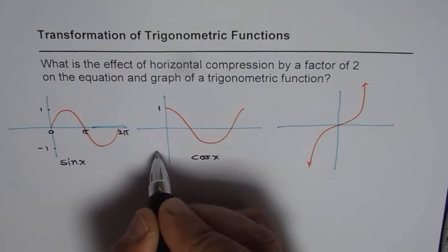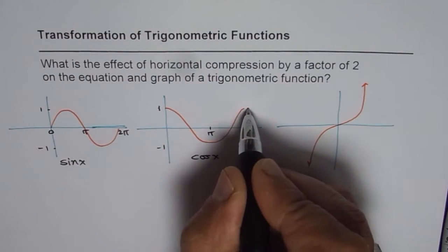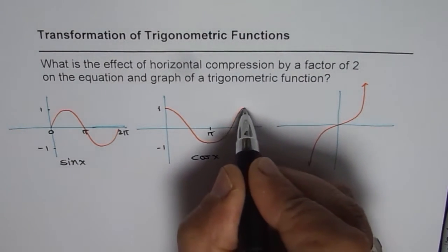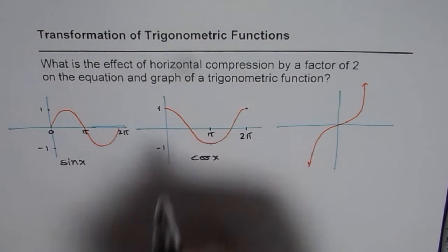So at pi mid-weight is minus 1, this is pi and then it ends with 2 pi at a maximum point. Minimum is minus 1 at pi.